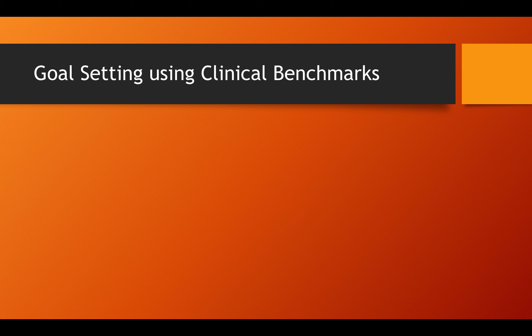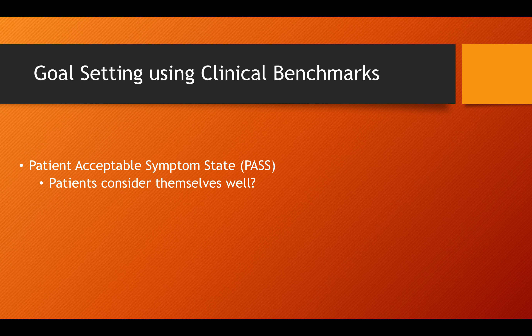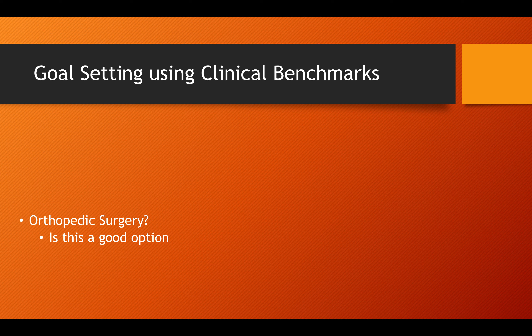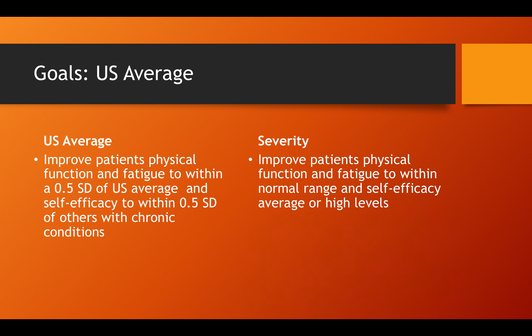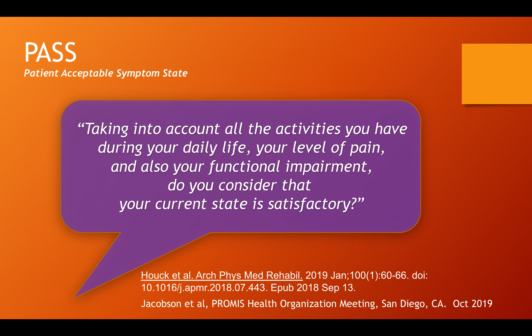Now let's shift to goal setting using clinical benchmarks. We can start with using the US average and severity to set goals. Using the US average, we might write: improve patient's physical function and fatigue and self-efficacy to within a half standard deviation of others with chronic conditions, recognizing the difference in the reference populations. Or using a severity scale: improve patient's physical function and fatigue to within normal range and self-efficacy to average or high levels.